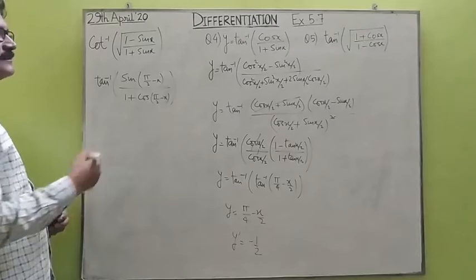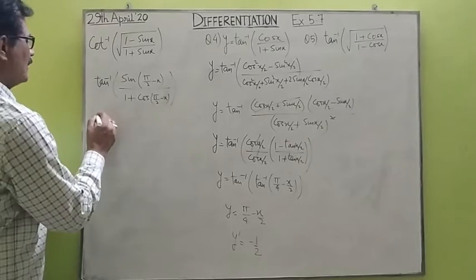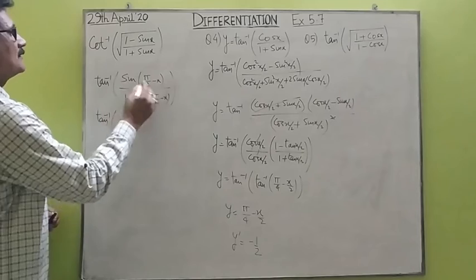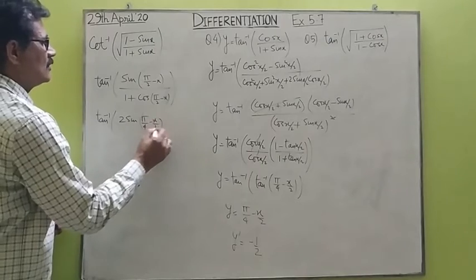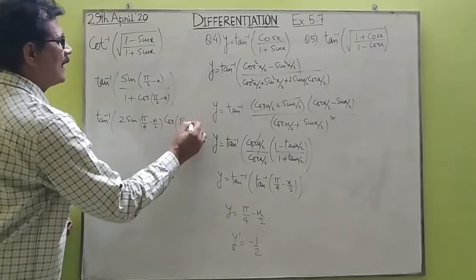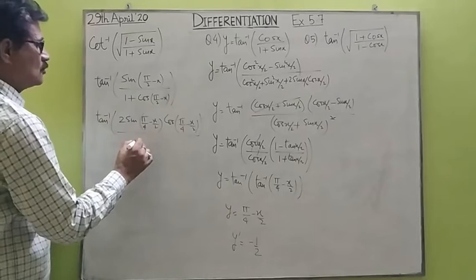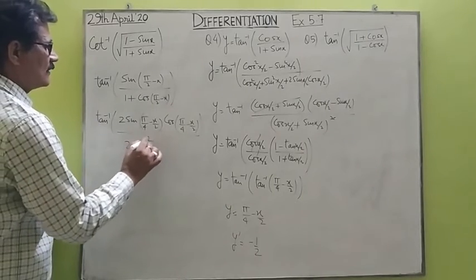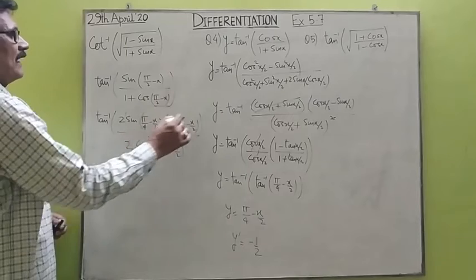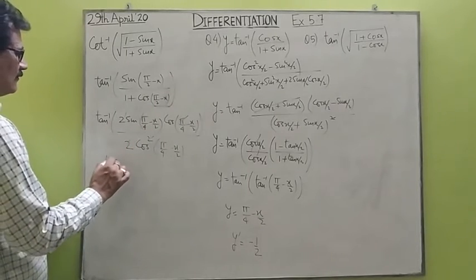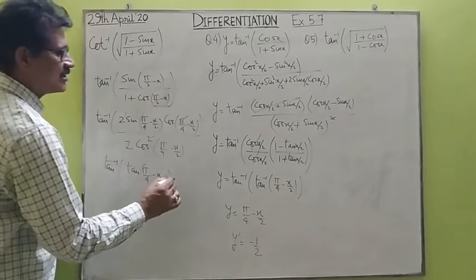You know that 1 plus cos has a formula, and sin alone has the formula 2 sin(x/2) cos(x/2). So it becomes tan inverse of sin(π/2 minus x), which is 2 sin(π/4 minus x/2) cos(π/4 minus x/2), whereas the denominator becomes 2 cos squared(π/4 minus x/2). Simplifying, we find this becomes tan inverse of tan(π/4 minus x/2), and we directly reach that step.